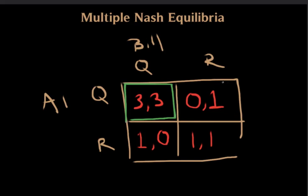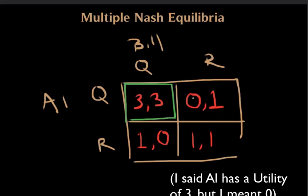What about this scenario over here, where Al is staying quiet and Bill is running? In this case, Al is stuck with the zombie and has a utility of 0. So if he knew Bill was running, he would want to run as well and increase his utility from 0 to 1 and be better off. So we know that this is not a Nash equilibrium.